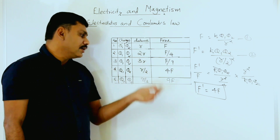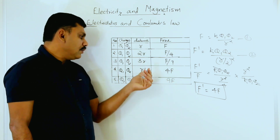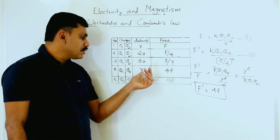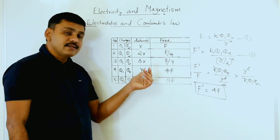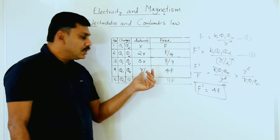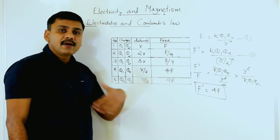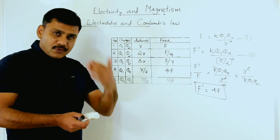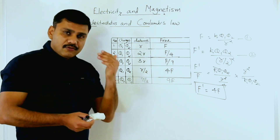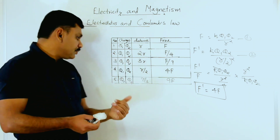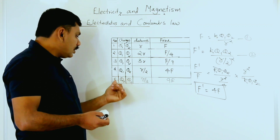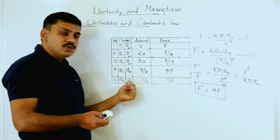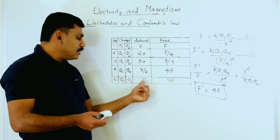When the distance is reduced, the force becomes greater. If the distance is r/2, the new force will be four times the previous value.